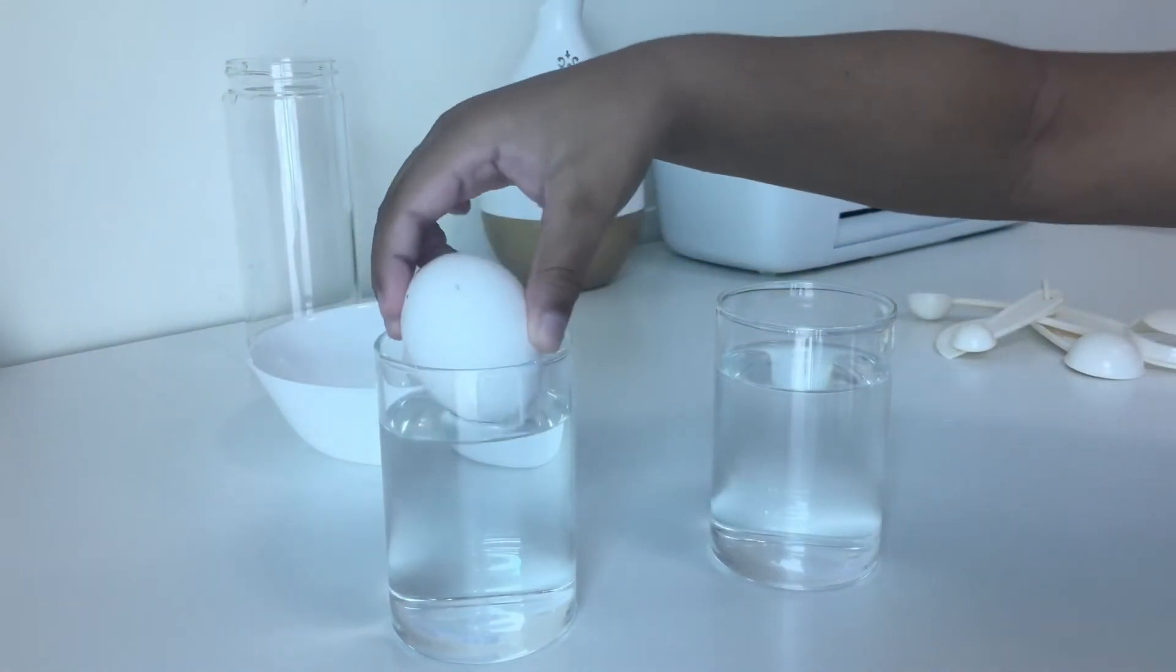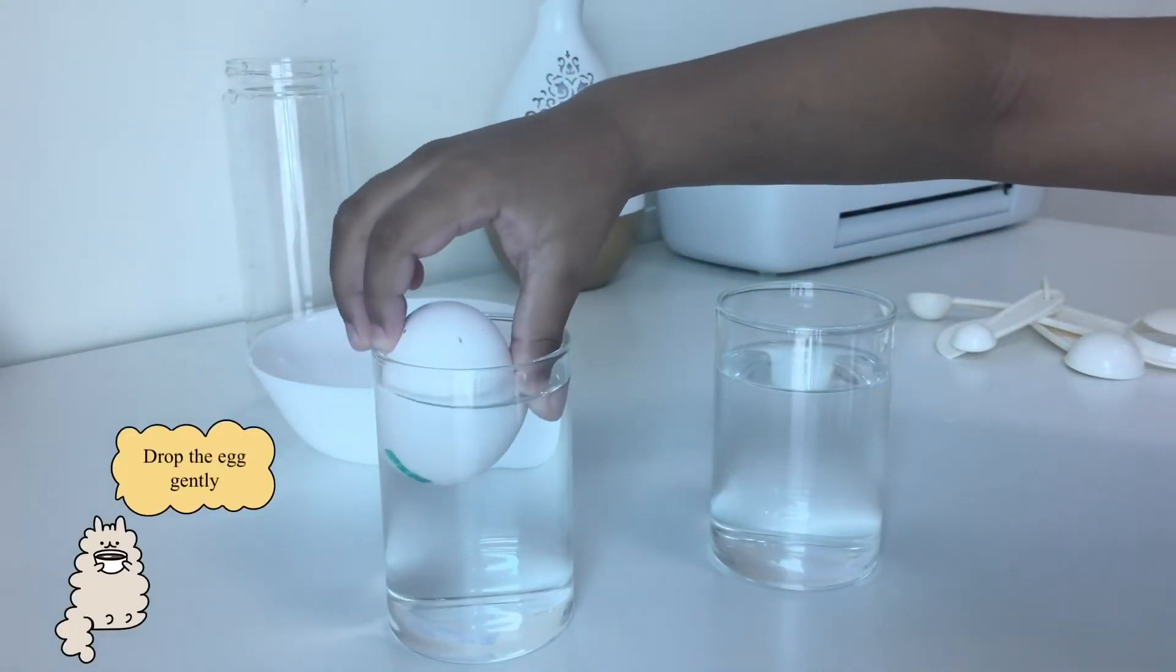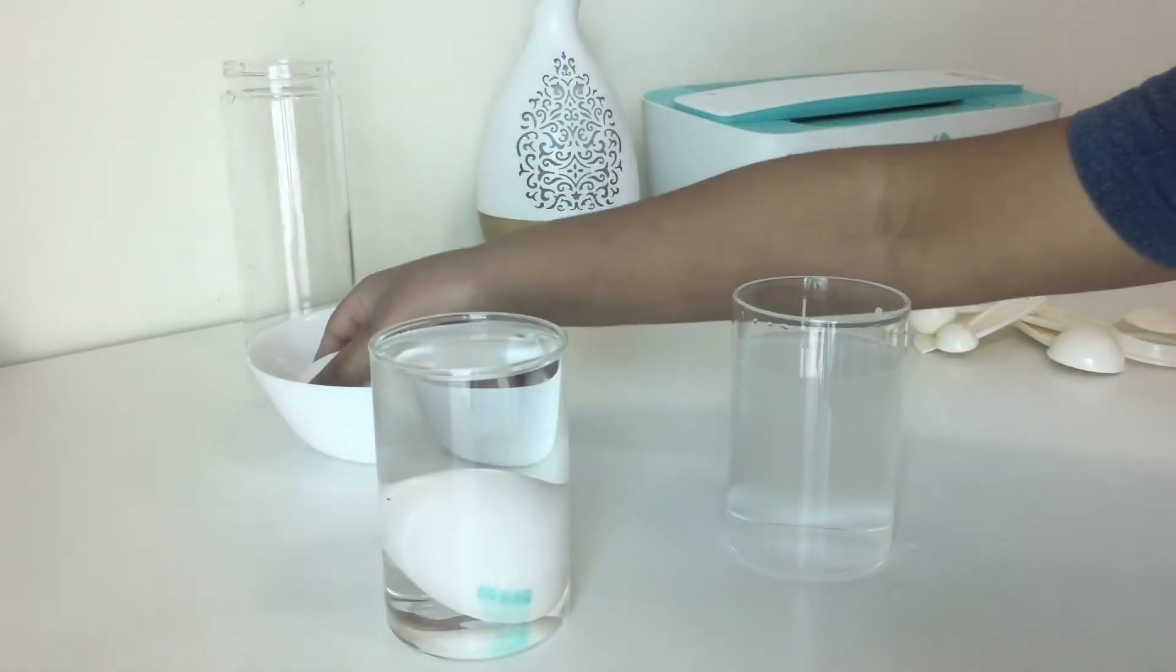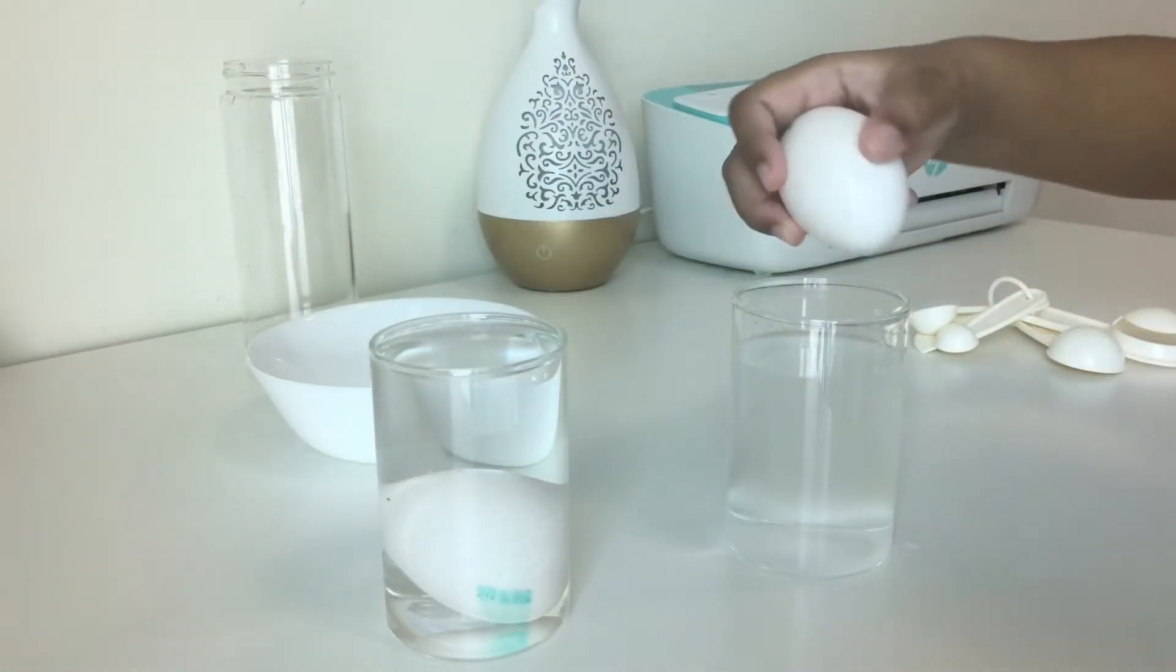Now gently drop the raw egg into the glass with no salt. Now drop the other egg into the glass with salt water.